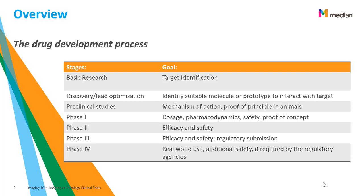All other phases after preclinical are conducted in humans. FIM studies — first in man — the goal with Phase 1 is to understand the dosage, pharmacodynamics, safety, and proof of concept. Phase 2 is efficacy and safety. Phase 3 looks at efficacy and safety with a bigger group of patients and leads to a regulatory submission. Phase 4 is real-world use and additional safety if required by the regulatory agencies.